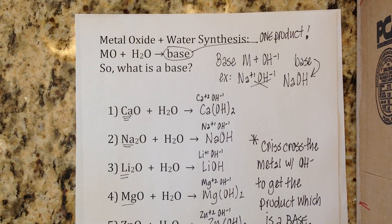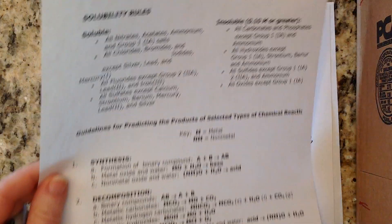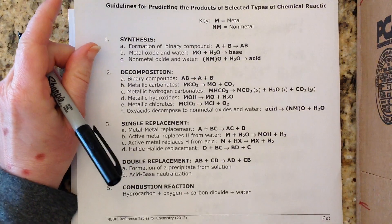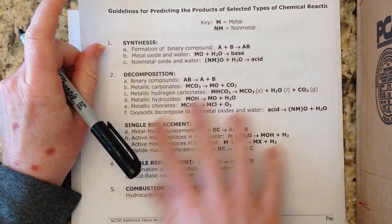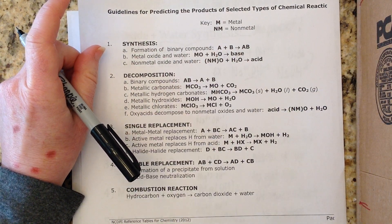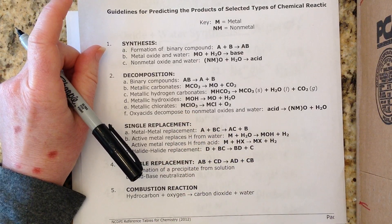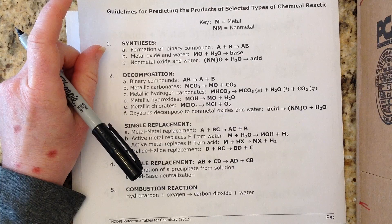The next lesson will look at the opposite of a synthesis reaction: decomposition reactions, and there are many types to cover. If you're a student in North Carolina with the reference table packet, have that section out when watching those videos. Students from other states can pull up a similar reference table online — it will make learning to write these reactions much easier.